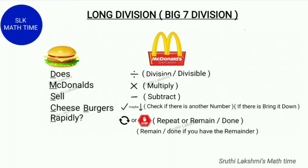Division is one of the four basic operations of arithmetic. The division symbol is represented with a horizontal line and a dot above and another dot below. This is the division symbol. Division is nothing but when you split a whole into equal parts or groups.